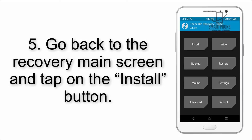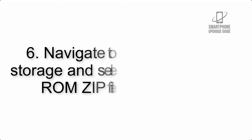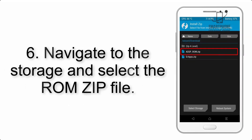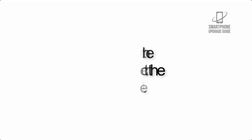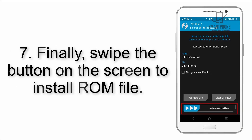Step 5: Go back to the recovery main screen and tap on the Install button. Step 6: Navigate to the storage and select the ROM zip file. Step 7: Finally, swipe the button on the screen to install the ROM file.